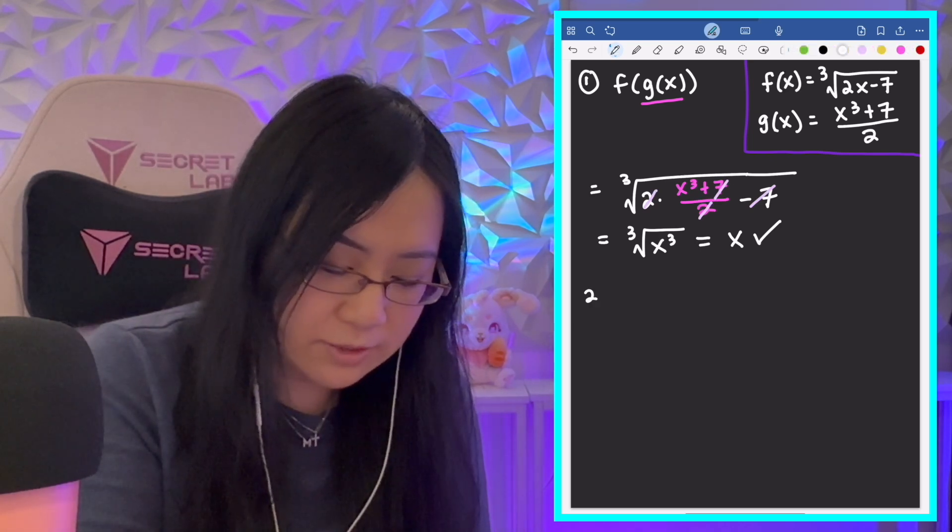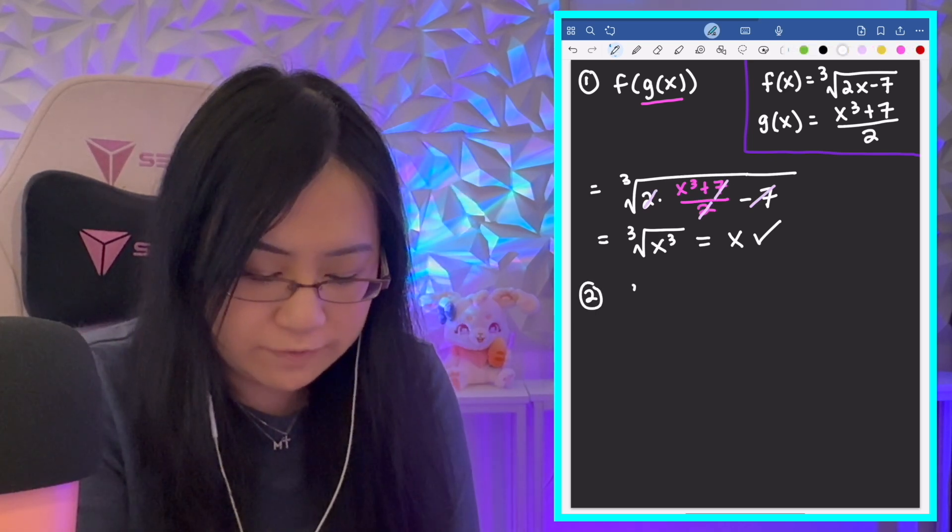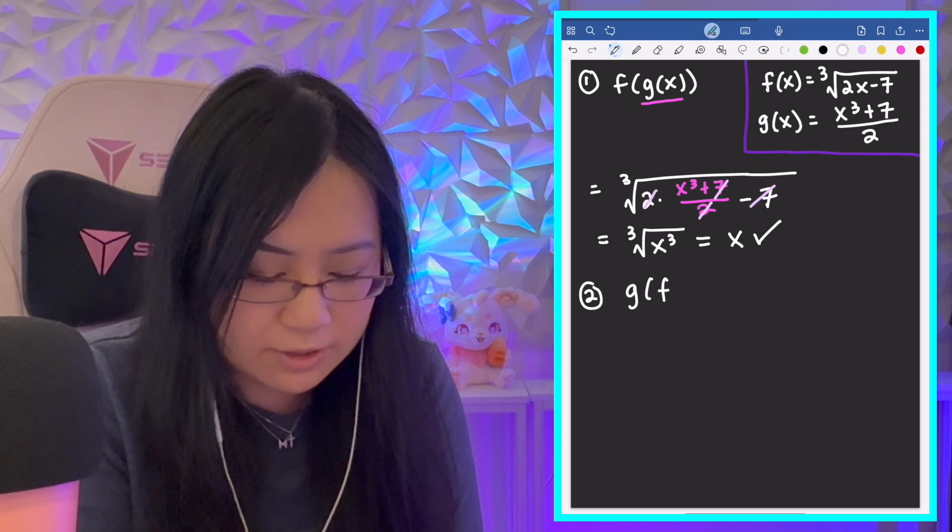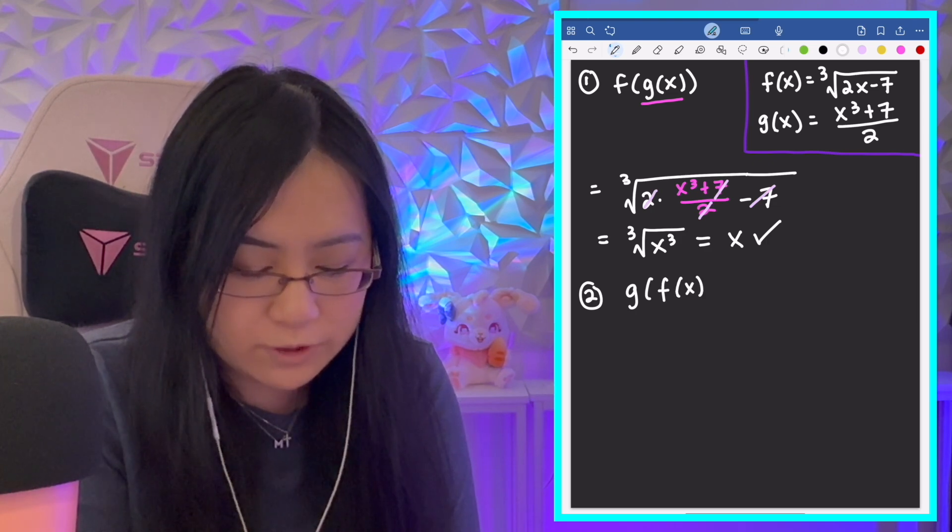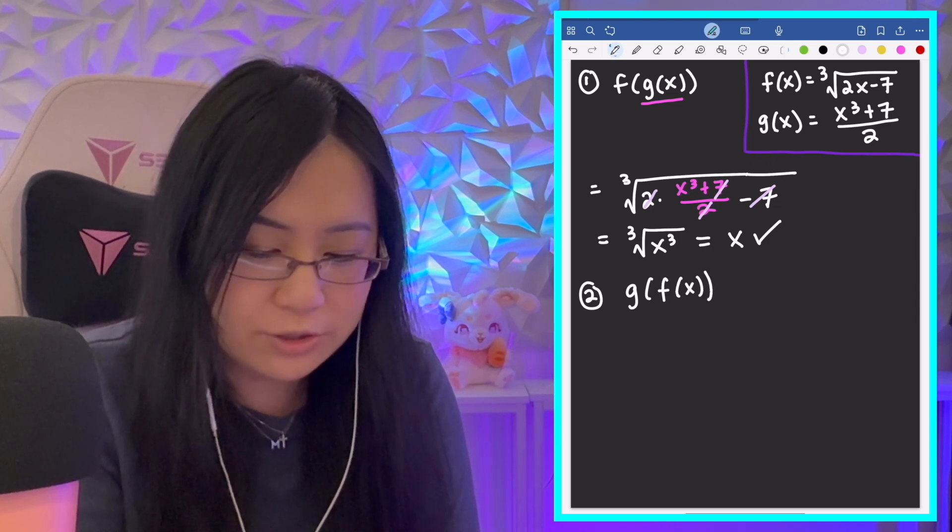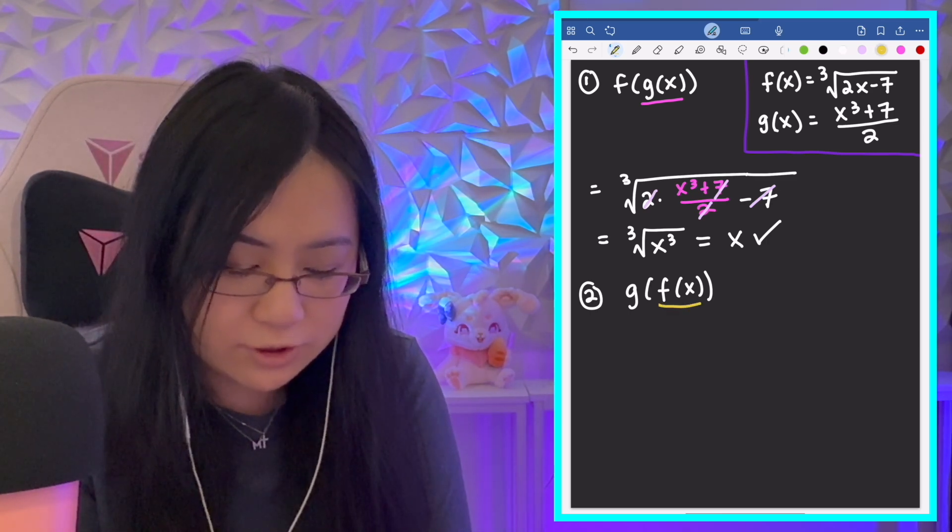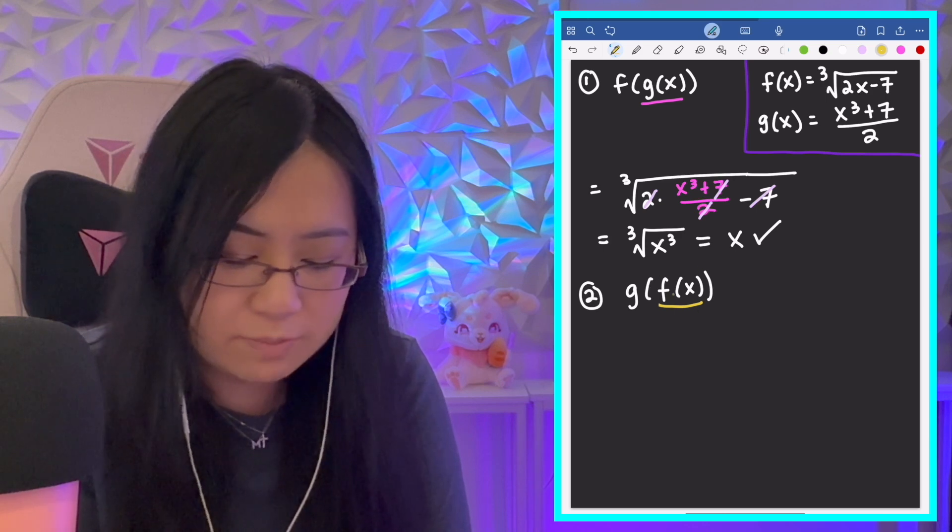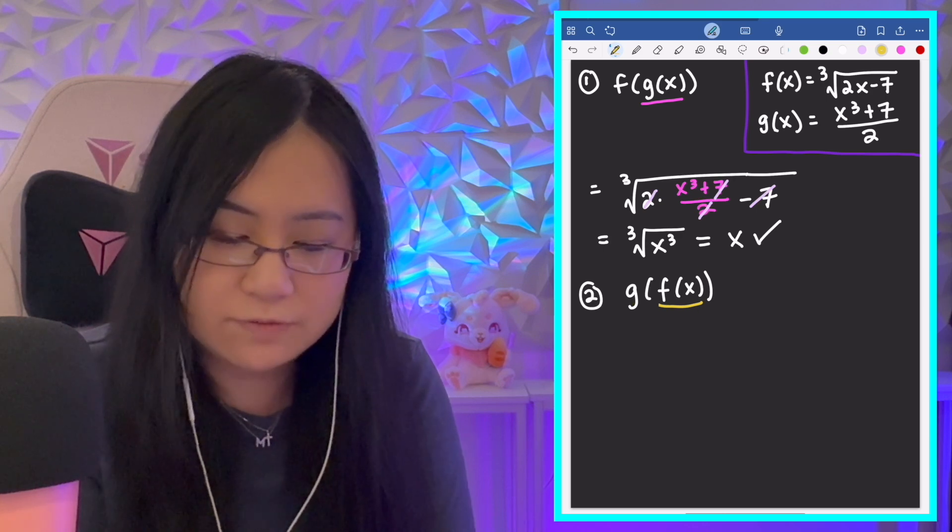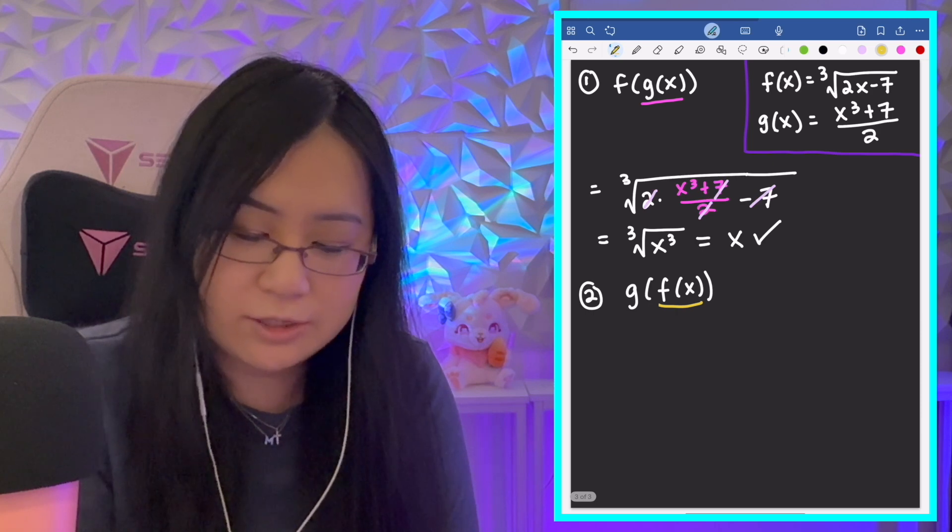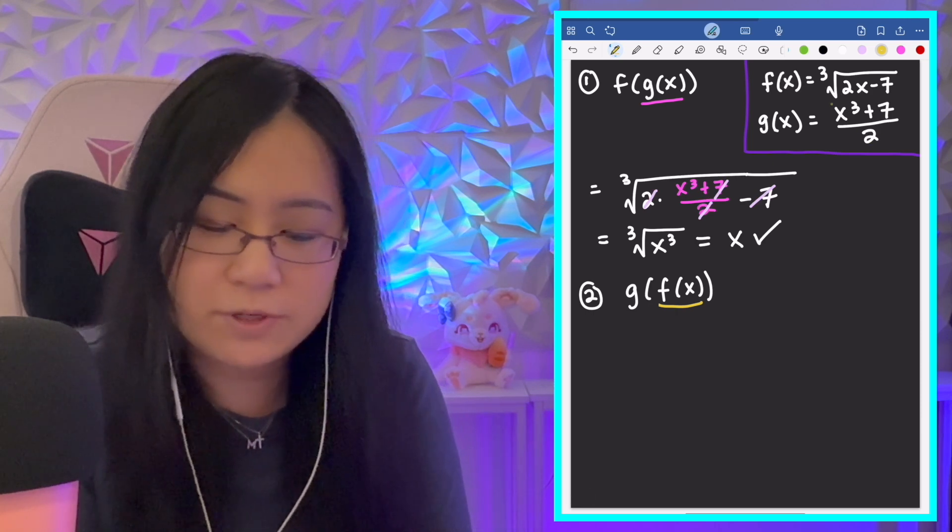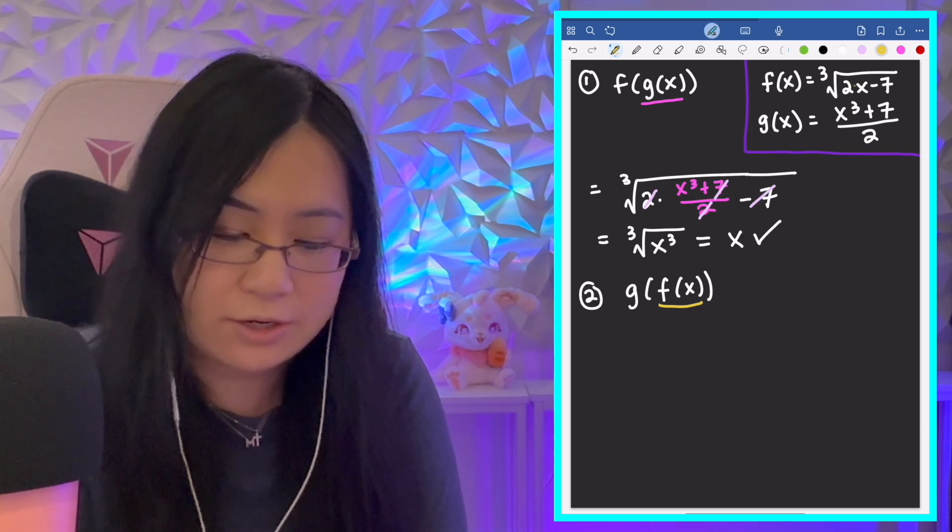It's the same way the other way. So, we also have to do g(f(x)), and all you have to do is be very careful of which function you're plugging into the other. So, in this case, we work inside out. We have our f(x) function that we're plugging into the input of the g(x) function. So, we're looking at x cubed plus 7 over 2, and everywhere that I have an x, I'm putting the entire f(x) function.